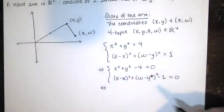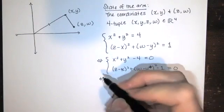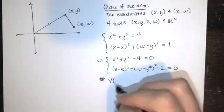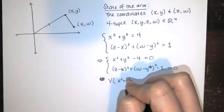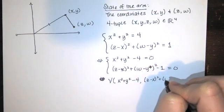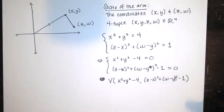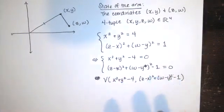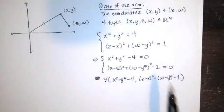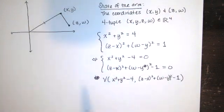Then you can see that the state of the arm is completely described by this variety given by this polynomial equation and this polynomial equation. So if you know something about this variety, which is the set of all points (X,Y,Z,W) such that this is equal to zero and this is equal to zero, then you actually know all the possible states of this arm.